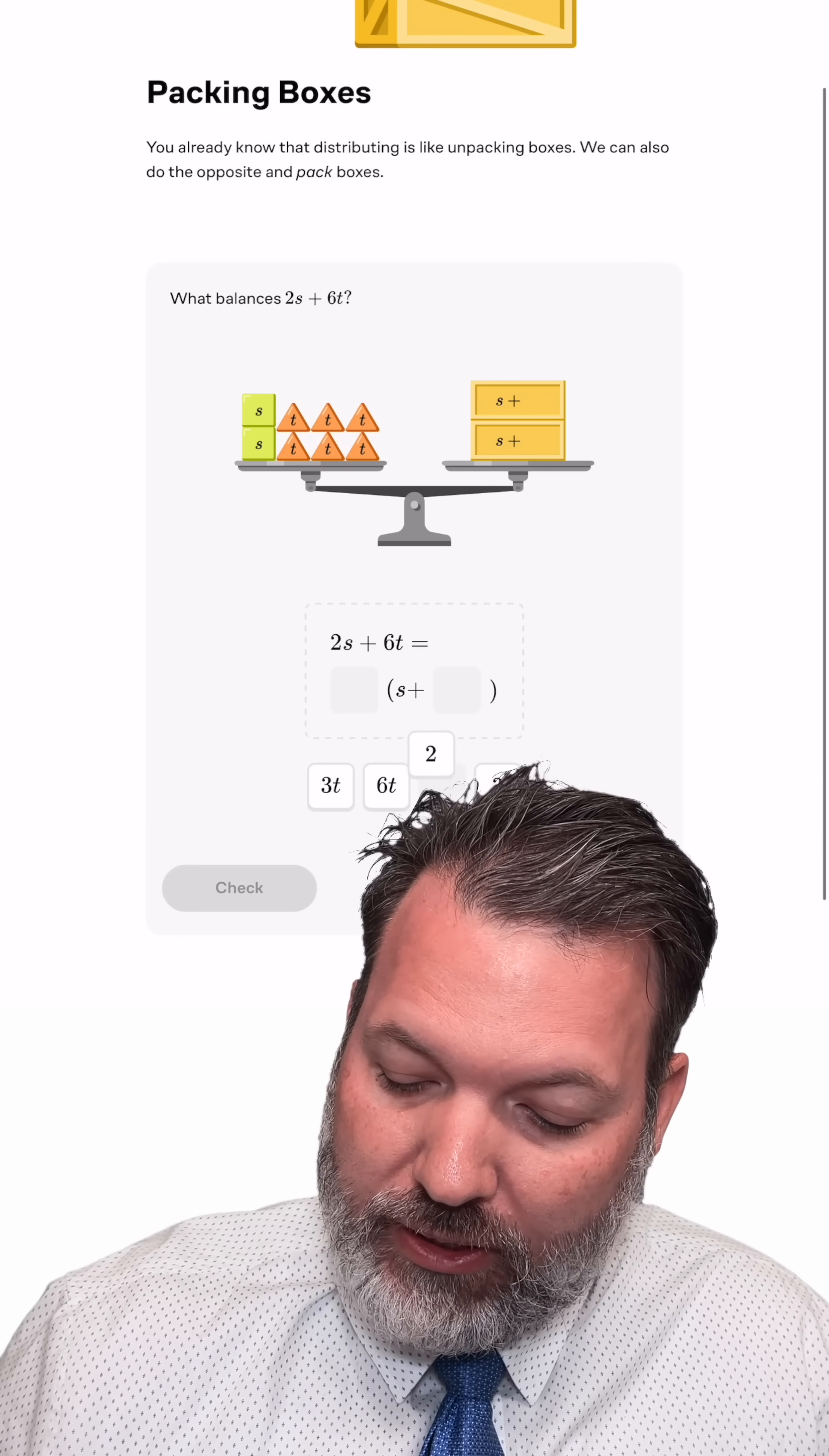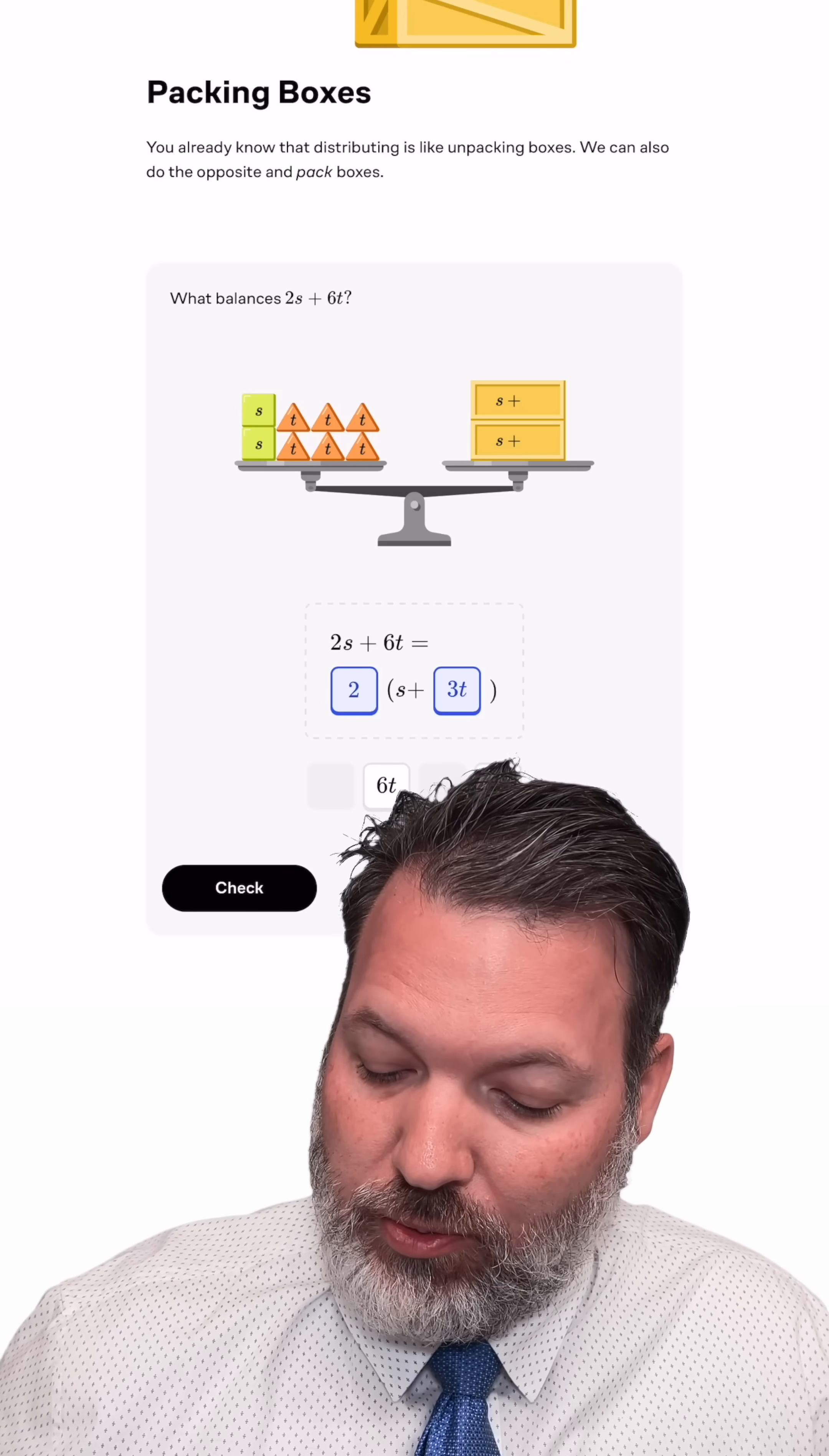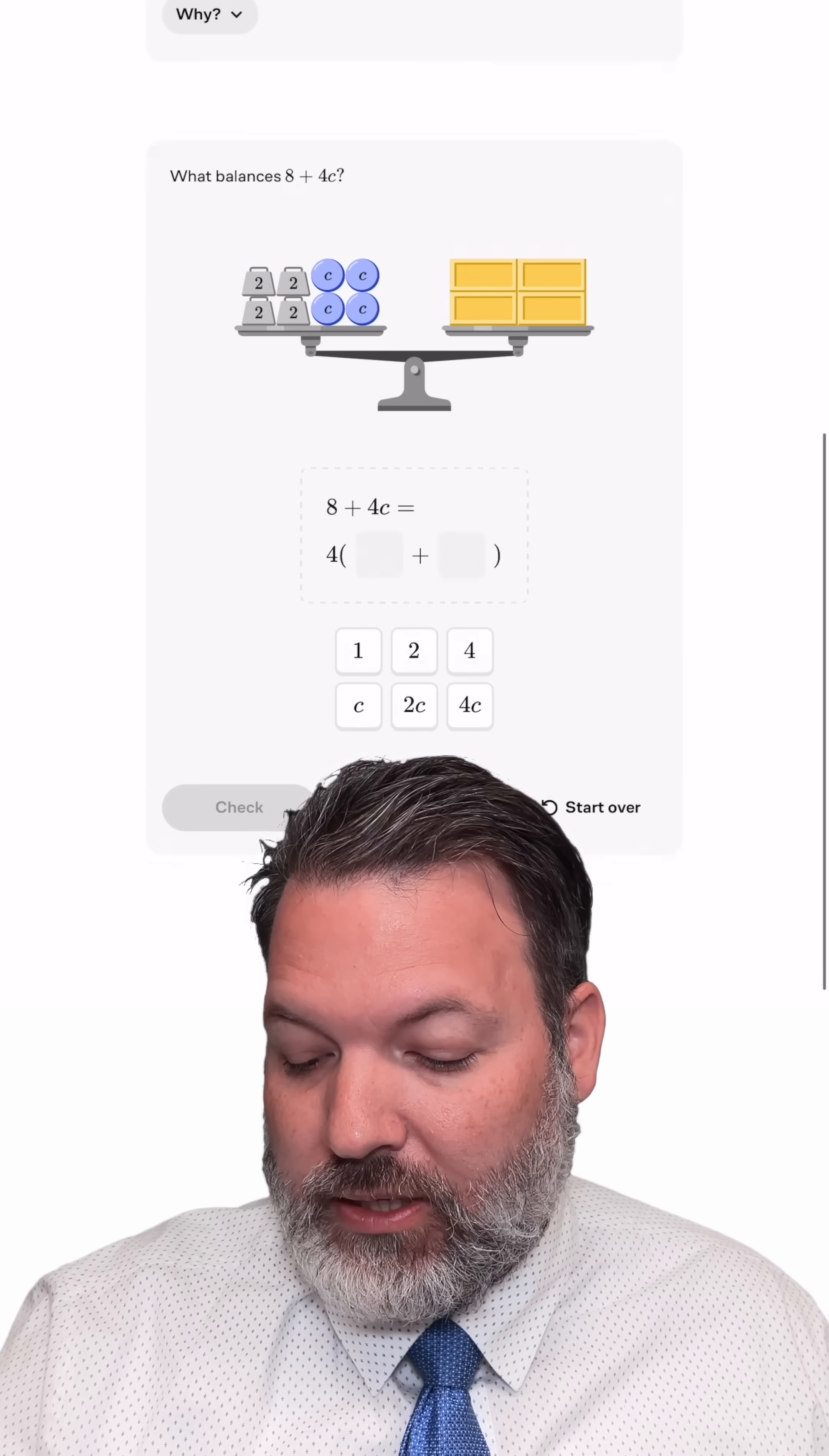In our brilliant.org system, we can just kind of drag these things over, 2 times the quantity, s plus 3t. Of course, we want to check our work, plus 15. And then we can continue on from there.